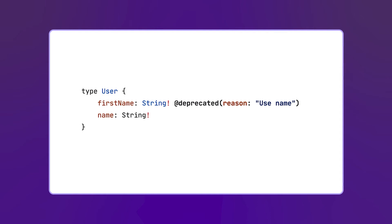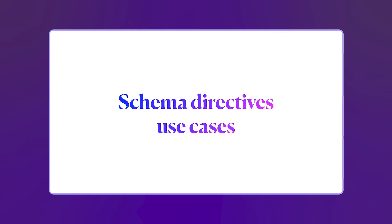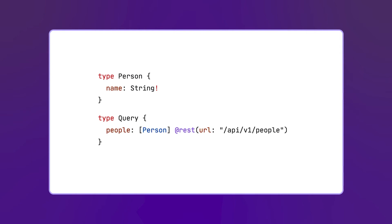Schema directives are usually used in combination with schema-first GraphQL libraries. They allow transforming the schema and the resolvers. Here we have a schema defining a list of people with a people type, and the people field is using a directive called REST, passing a URL. This directive could be implemented to add a resolver to the field that makes an API call to the endpoint defined in the URL parameter, and you could even change the schema to add pagination.